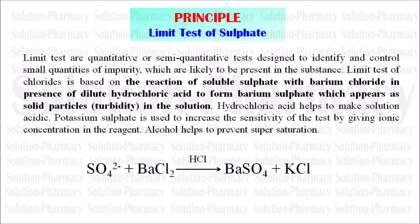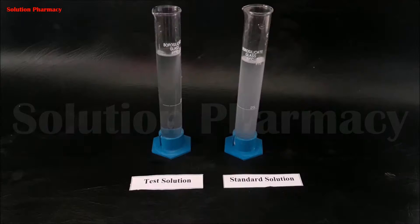If the turbidity which occurs in the test solution after the reaction is greater than the turbidity of the standard solution, it means the sulfate impurity present in the sample is more than the standard limit — the sample does not pass the limit test of sulfate. If the turbidity of the test solution is less than that of the standard solution, the impurity is within the limit and the test sample passes the limit test of sulfate.